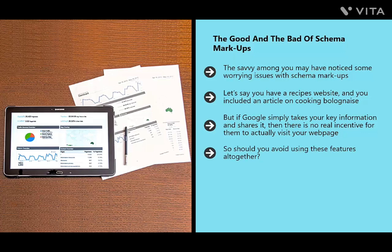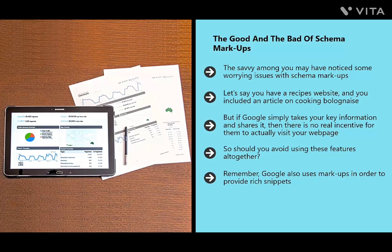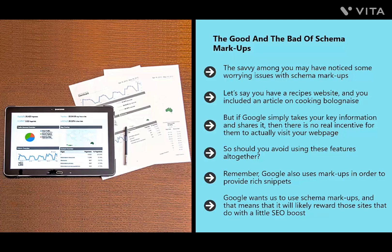Should you avoid schema markups altogether? Unfortunately, that's not really an option. Google uses markups to provide rich snippets — media-rich search listings with star ratings, images, and bullet points — that really help a page stand out in the SERPs. If you don't include markup language, Google will just get that same information from one of your competitors. Google likely rewards sites that do include markup with an SEO boost. So it's essential to keep using this strategy even if you're giving Google free information.